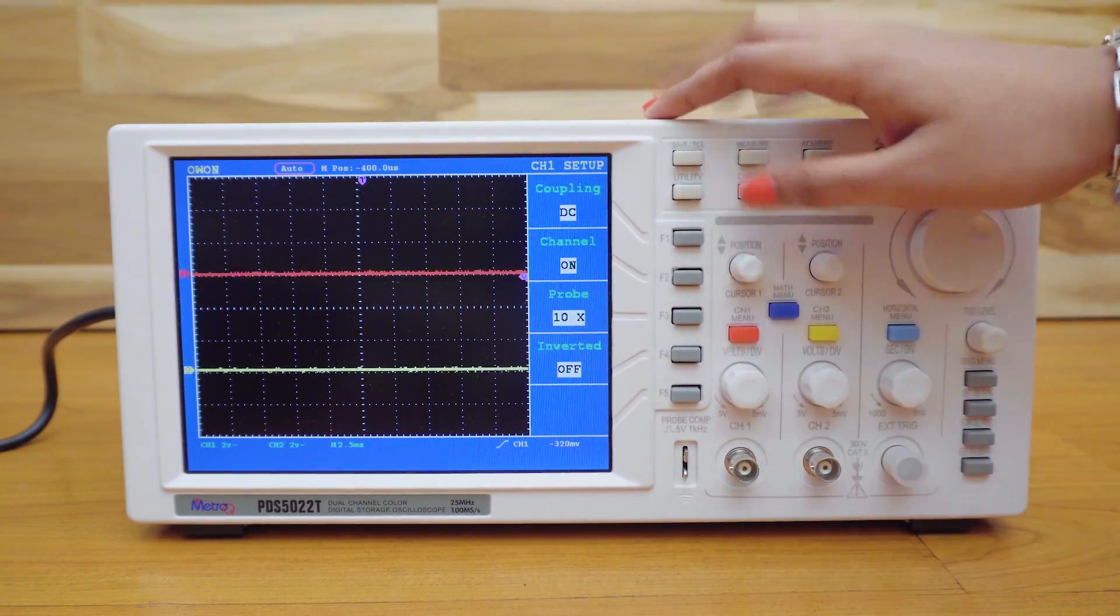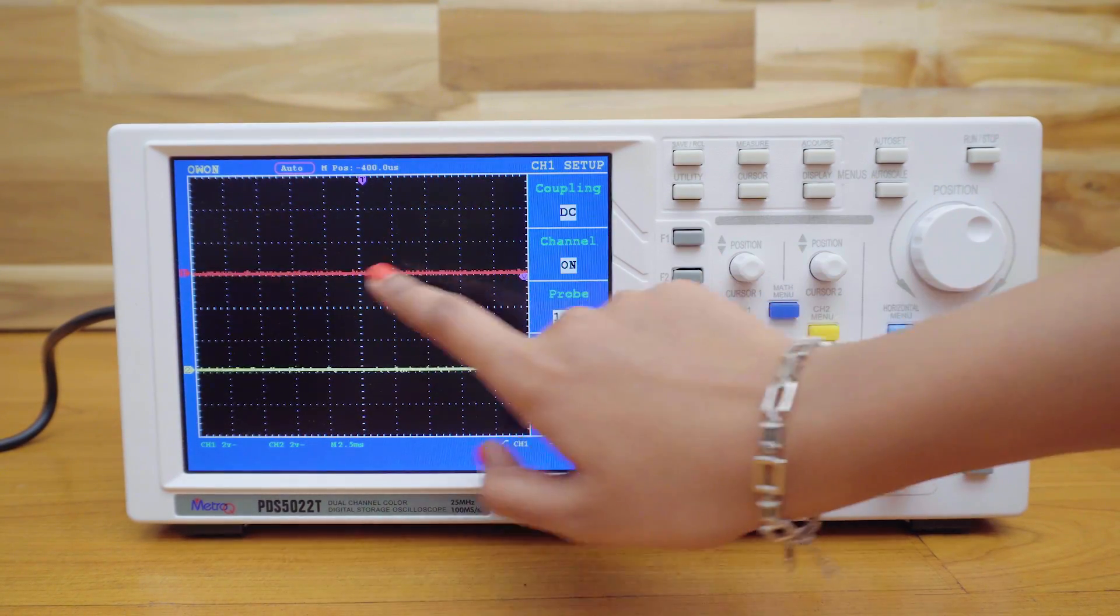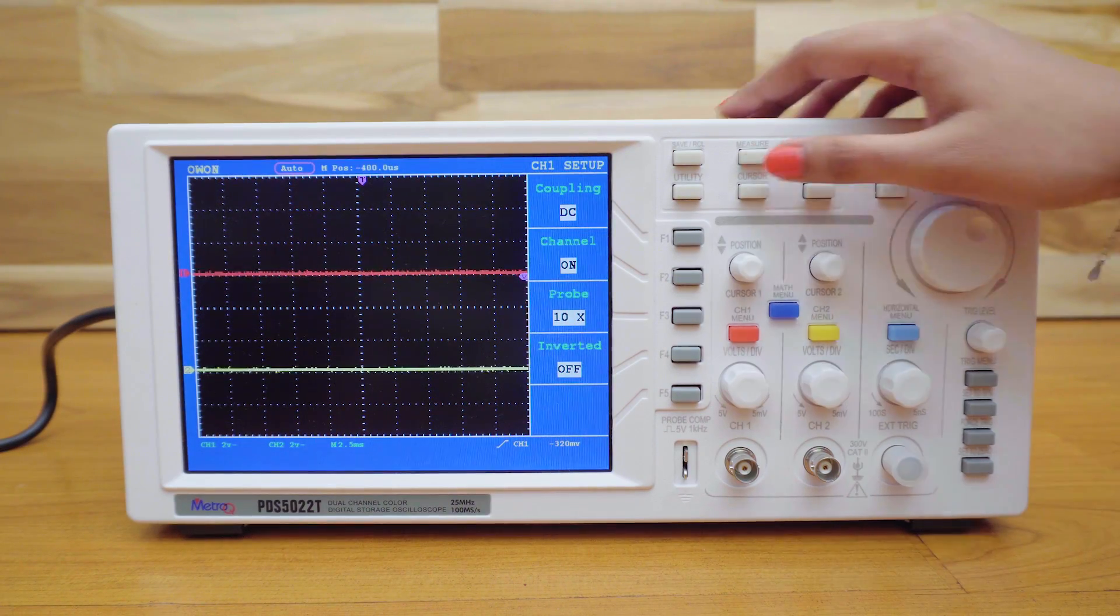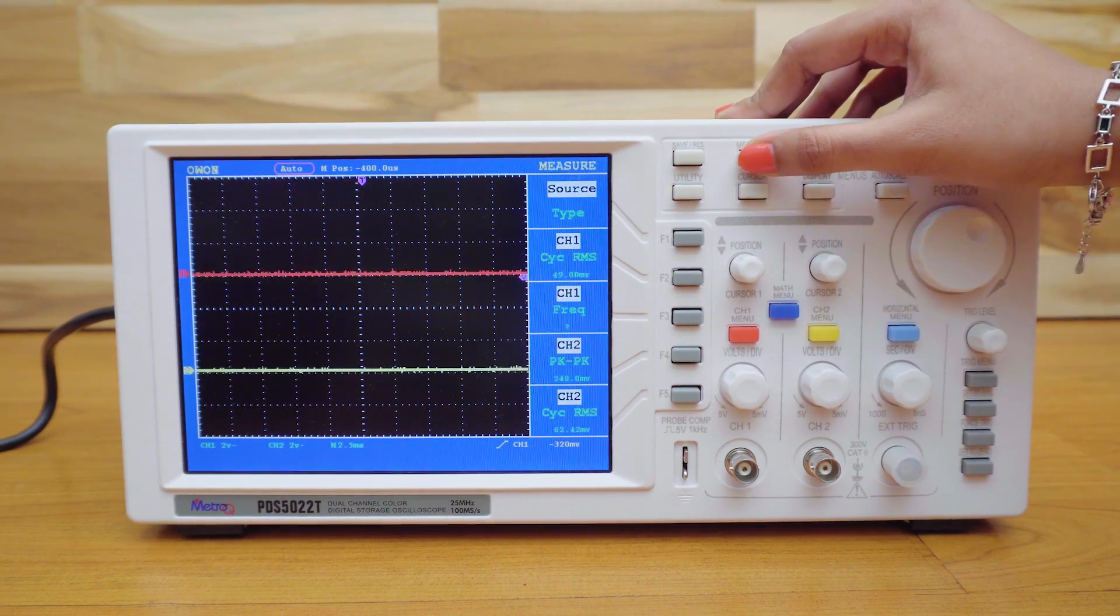We can measure and calculate the various parameters of the signal manually. But in this latest oscilloscope, there is a measure button, which automatically displays them on the screen. This is the measure menu,